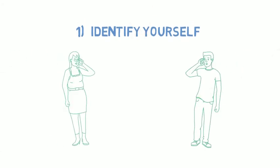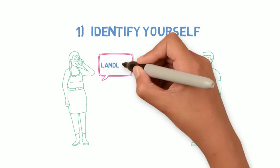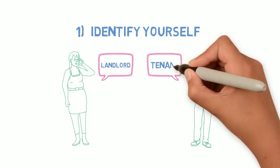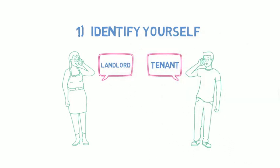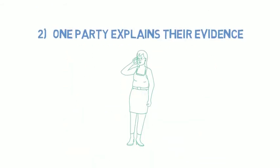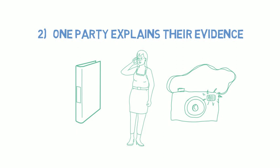A hearing has six usual steps. Step 1: Call into the hearing and provide your name, the name of anyone else that is with you, and identify whether you are there as or on behalf of the landlord or the tenant. Step 2: The arbitrator will ask the first person, also known as a party, to explain the evidence they have submitted related to the issues at hand.